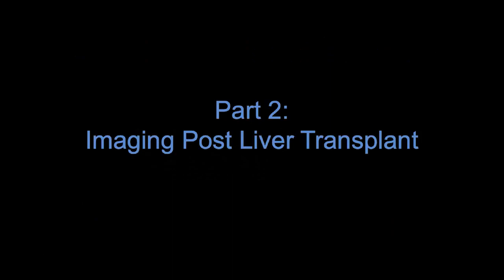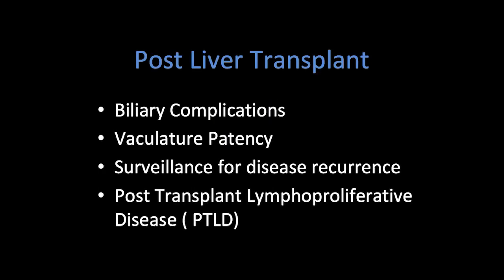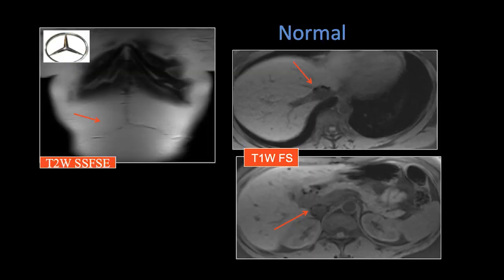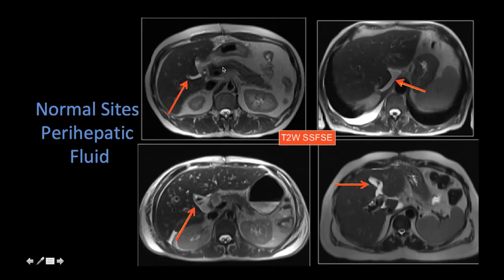Now let's move on to part two — imaging post liver transplant. Post liver transplant complications: the reasons patients come to MRI include biliary complications, assessment of vascular patency, disease surveillance, and sometimes for PTLD. In these post-transplant patients, you'll see the Mercedes-Benz incision, susceptibility artifact along the caval anastomosis superior and inferior, and small fluid collections often along the ligamentum venosum, the portohepatic region, and along the ligamentum teres — that's a normal appearance.